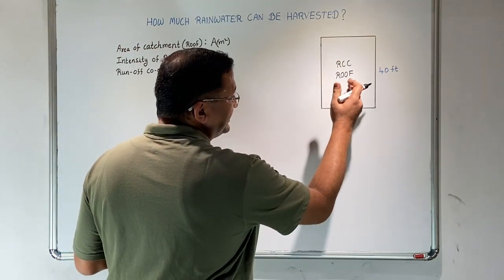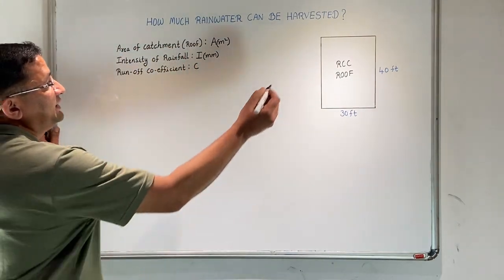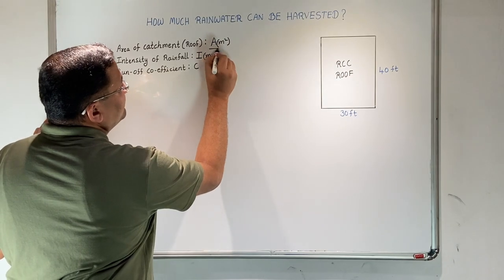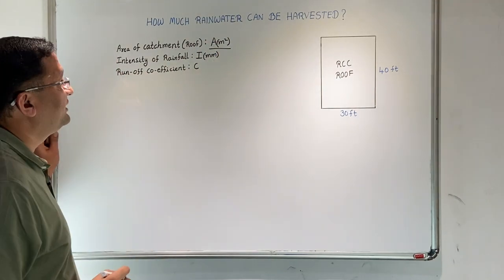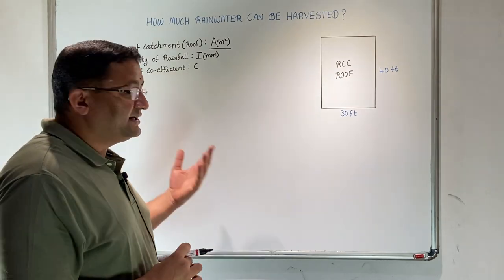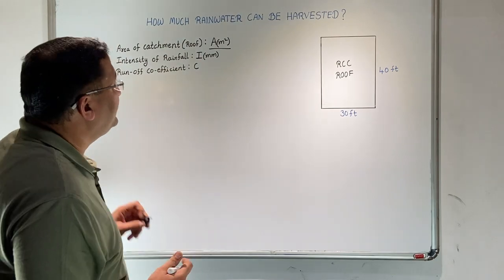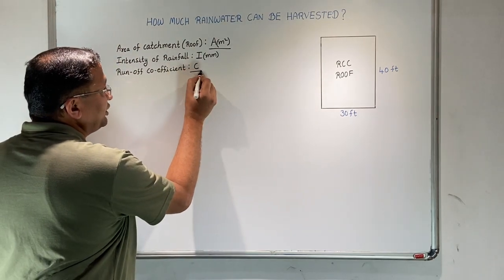When it rains, how much water can be collected and harvested? Here we have the roof area in meter square. Then we need to know the intensity of rainfall. Generally, intensity of rainfall is measured in millimeters, and there is another variable called runoff coefficient.